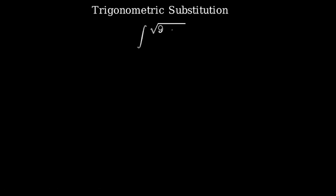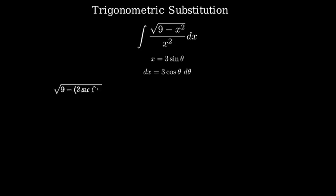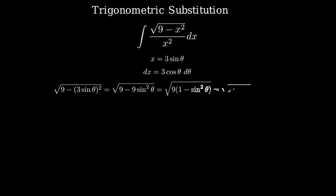We evaluate the integral of the square root of 9 minus x squared, all divided by x squared, dx, using trigonometric substitution. We'll use the substitution x equals 3 sine theta, which means dx equals 3 cosine theta d theta. Now we substitute these into the integral.